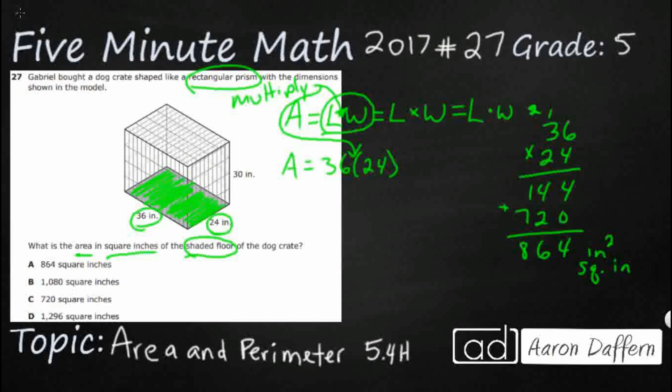And you'll notice we have 864 right there at A. So you might be thinking, well, that was super easy. Well, it was. It was simply a 2 by 2 multiplication. But here's the trick.